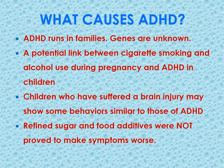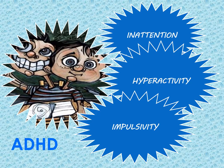ADHD runs in families, though the specific genes are unknown. There is a potential link between cigarette smoking and alcohol consumption during pregnancy and ADHD in children. Children who have suffered a brain injury may also show behaviors similar to ADHD. A popular theory in media claimed that sugar and food additives cause ADHD, but this is not scientifically proven. The three main cardinal symptoms of ADHD are inattention, hyperactivity, and impulsivity. As the child grows into adolescence, impulsivity becomes most important because it predisposes them to behavioral disturbances such as substance abuse, conduct disorder, and criminality.